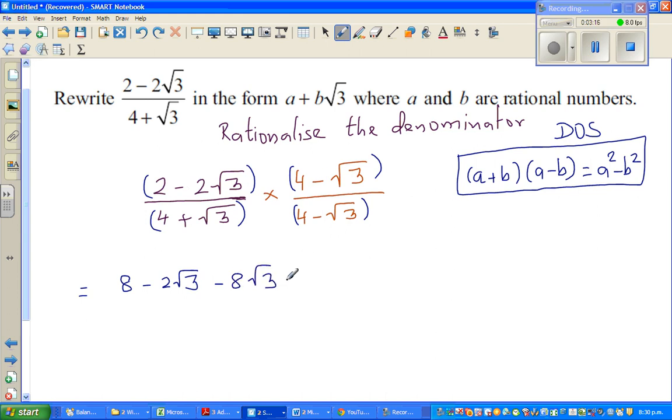And negative and negative is positive. So it's 2 times root 3 times root 3, and root 3 times root 3 is 3. So this becomes 2 times 3, which is 6.